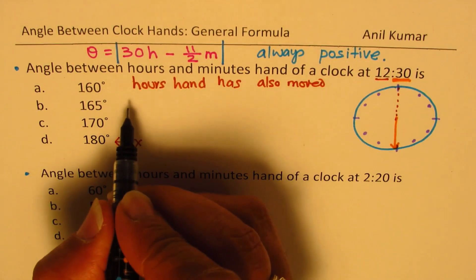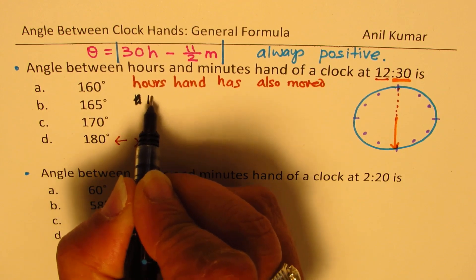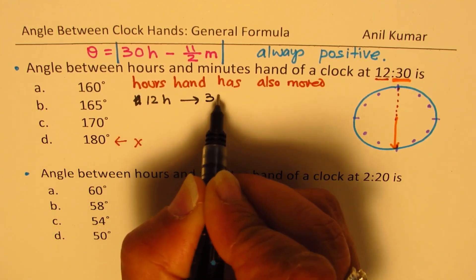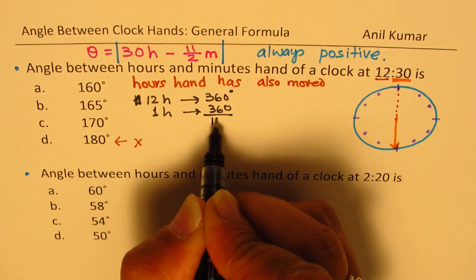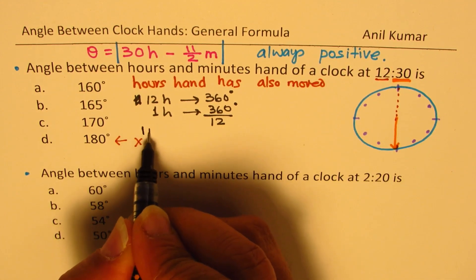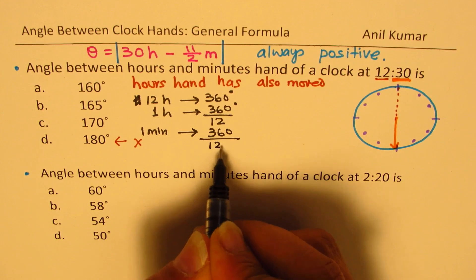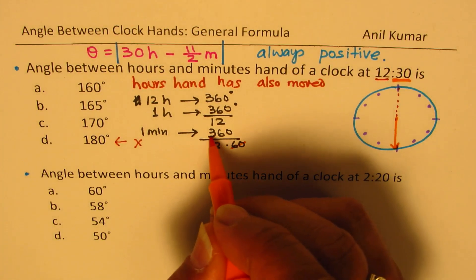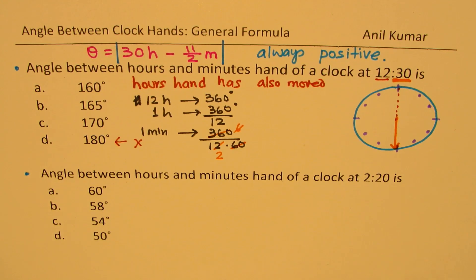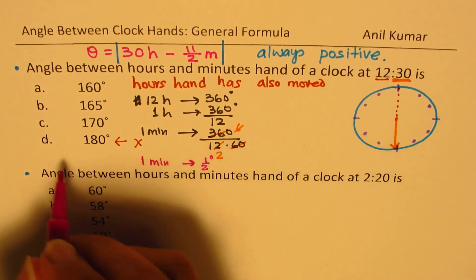To make one full circle, it takes 12 hours. So in 12 hours, we go 360 degrees. So in one hour, we'll go 360 divided by 12 degrees. And in one minute, there are 60 minutes in an hour. So we are going to divide this further by 60. This is a simple calculation. 60 will go six times and that goes two times. So what we get here is that the movement in one minute is half degree for hour hand.